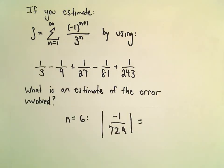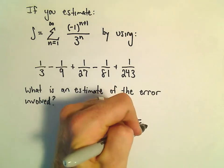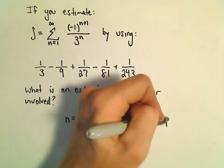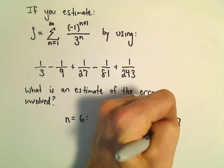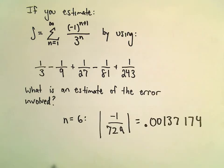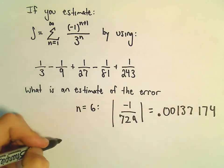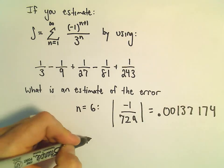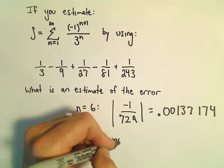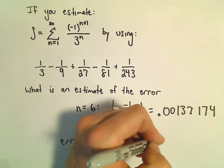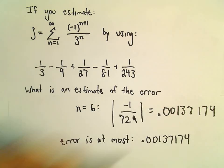And let's see, if we take 1 and divide that by 729, I'm getting 0.00137174 when I throw that into a calculator. So it says our error is at most the value 0.00137174.